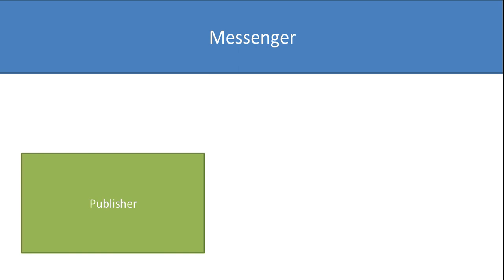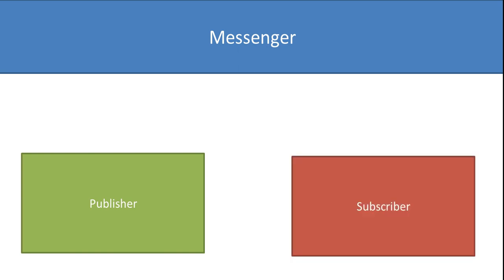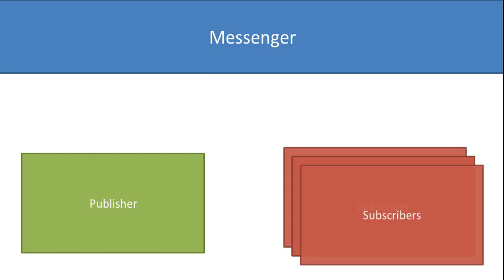The publisher could be a file watcher, something to do with the gyroscope, or your business logic. Once you've set up a publisher, you'll have one or more subscribers — a view or view model, or another component. Location updates might be going to three or four different places in your app, and the messenger decouples the publisher from the subscriber or subscribers.